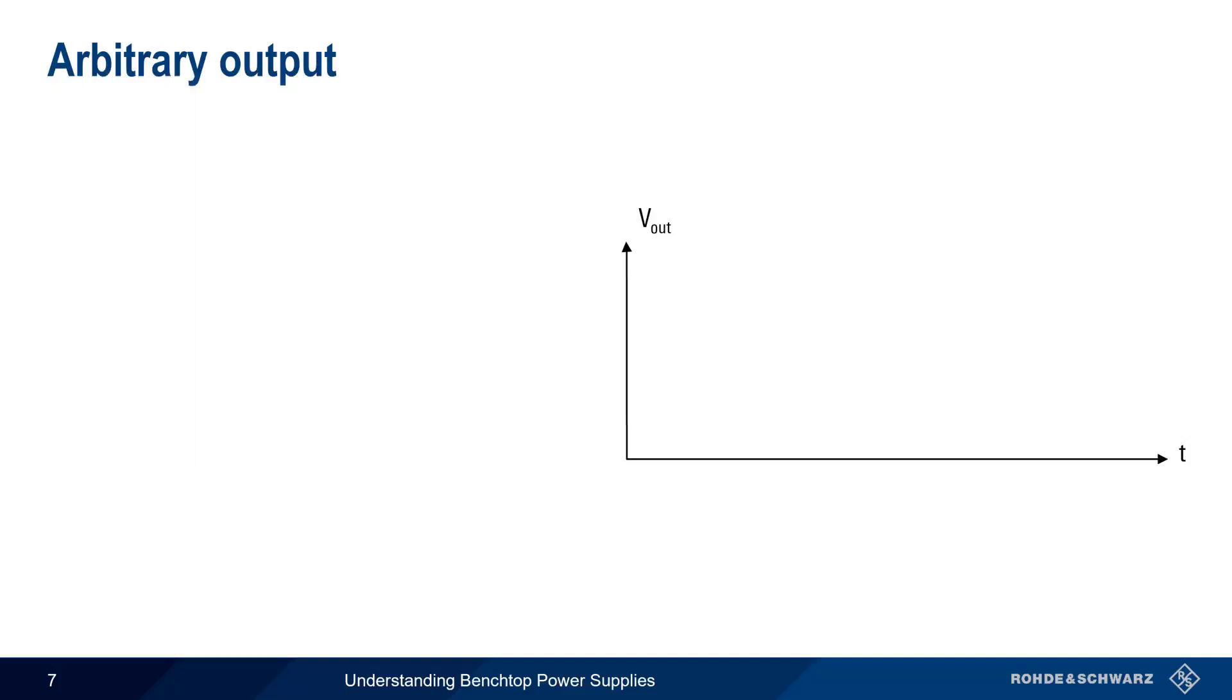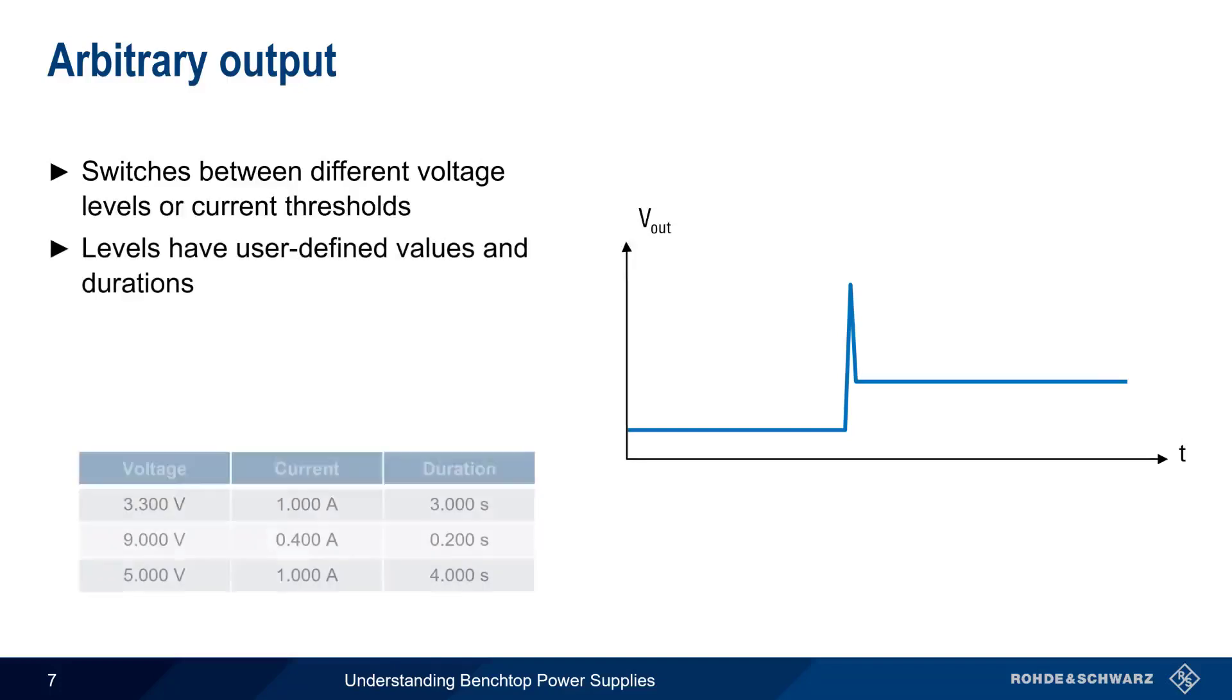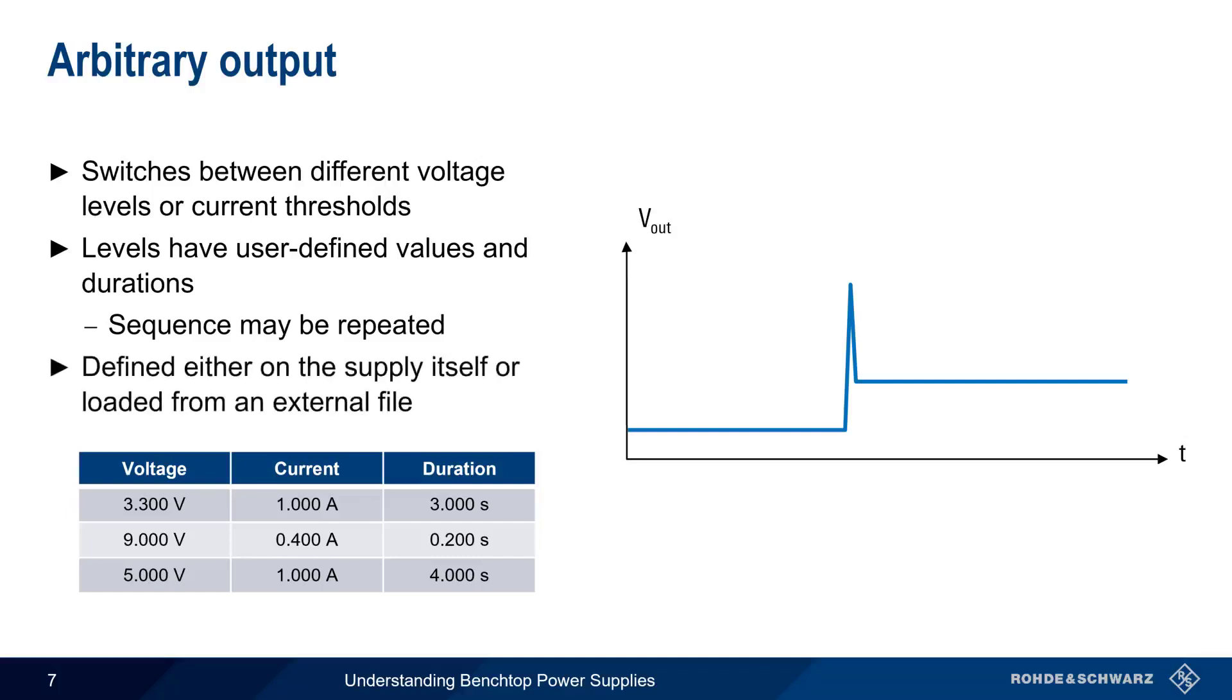Unlike ramp, which linearly increases the voltage from zero to a defined value, an arbitrary sequence switches the power supply between different discrete voltage levels or current thresholds. These levels each have user-defined values and durations, and this sequence may be repeated multiple times. These sequences are sometimes defined directly on the power supply itself, but are often loaded into the supply by means of an externally created file.